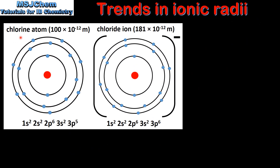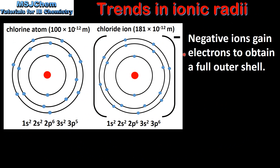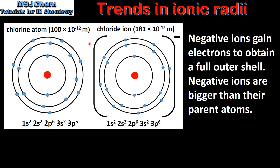Next we'll look at negative ions and we'll compare the chlorine atom and the chloride ion. Negative ions gain electrons to obtain a full outer shell. The chlorine atom has 7 electrons in the outer energy level whereas the chloride ion has 8 electrons in the outer energy level. Therefore the chloride ion has gained 1 electron to form a 1- ion. The chloride ion is bigger than the chlorine atom.